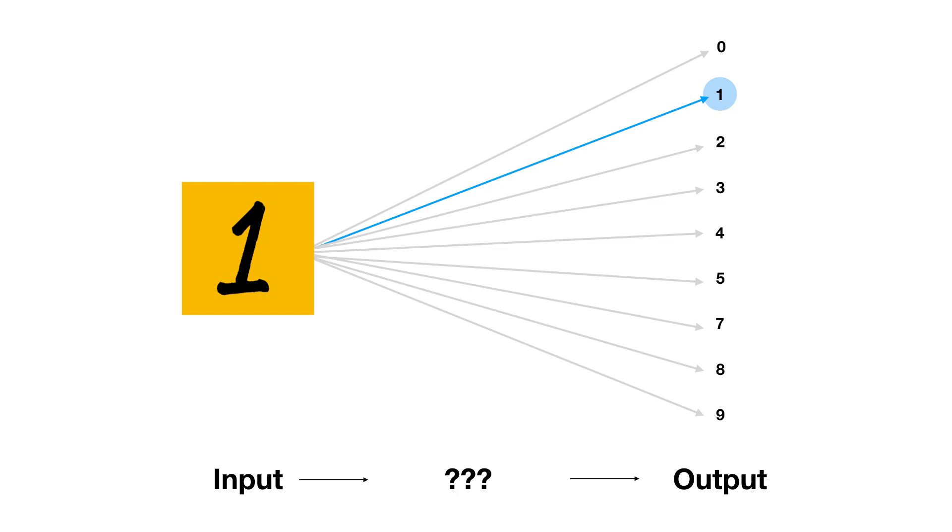The perceptron algorithm, if you think about it, is very constrained — it can only output a single number. So how do we take the output of a single number and turn that into a prediction for each possible digit?